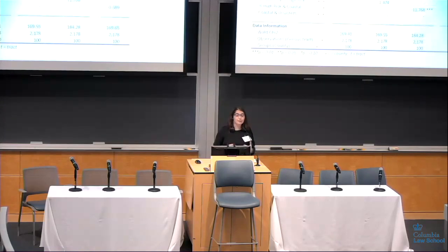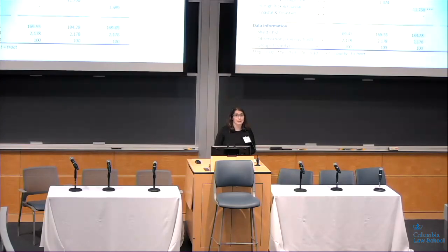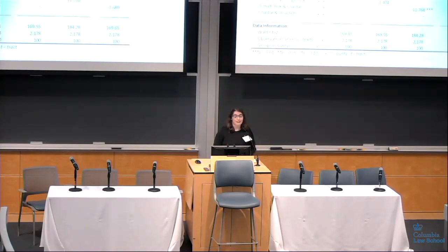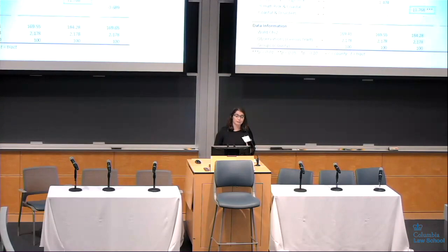Looking at how these things changed in the following decade: disasters are no longer significant for population loss. We think this is in part because there were fewer disasters during this time, and people may have thought: okay, I've been hit once, I had my one-in-100-year flood, I'm okay. Percent of high-risk was still significant, and at this point the interaction between high-risk and coastal conditions had switched to a significant negative coefficient.